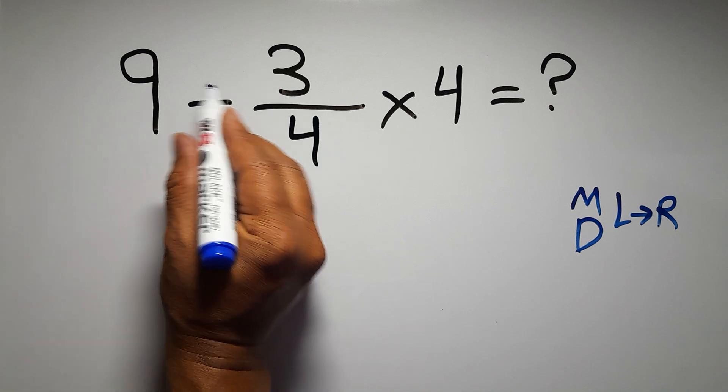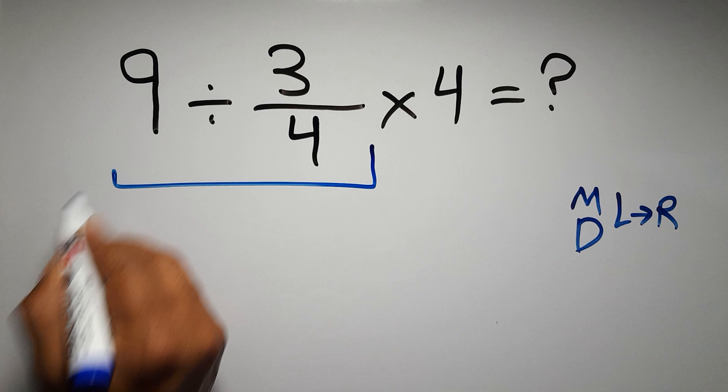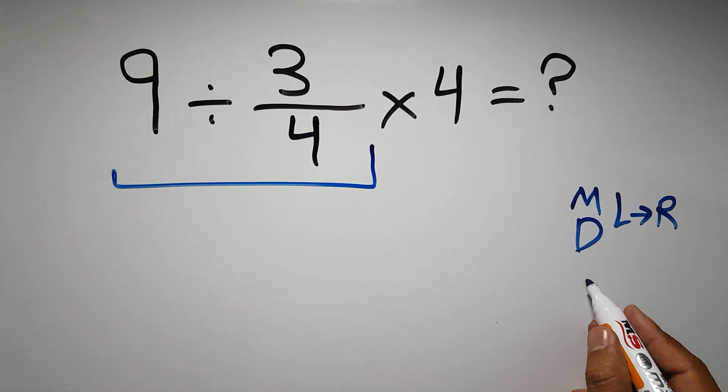So first this division: 9 divided by 3 over 4. According to the KCF rule, K stands for keep, C stands for change, and F stands for flip.